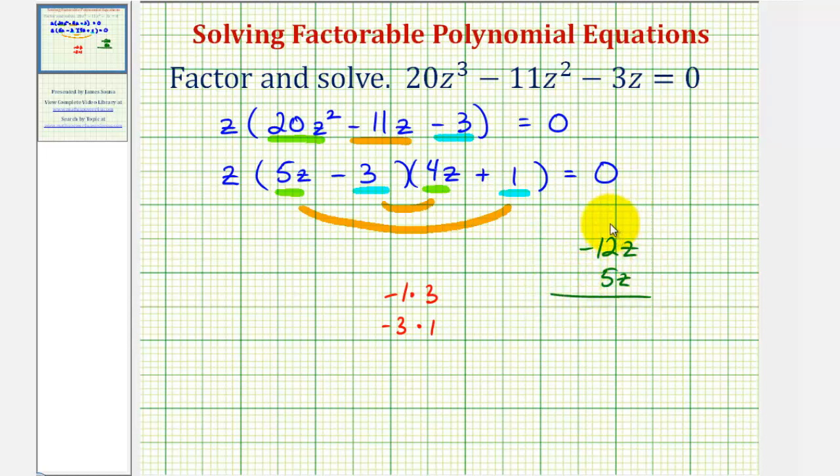Well, the sum is negative 7z, which is not negative 11z, which means we'll try something else.